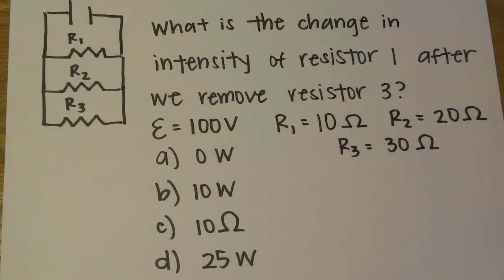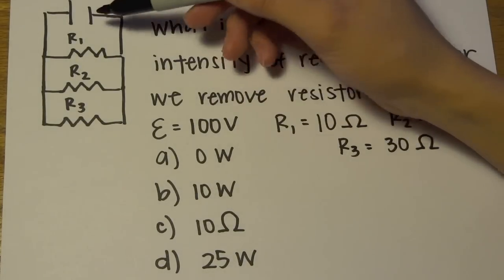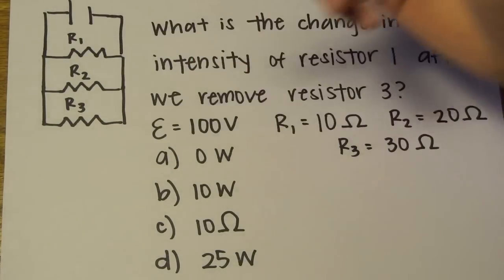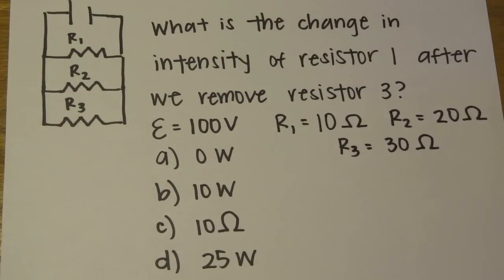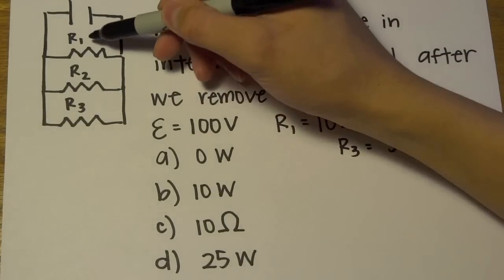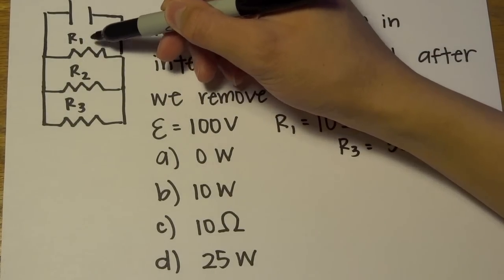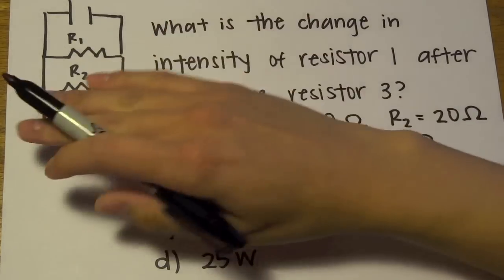The way we want to solve this is first we want to look at what we know and find out what we need to know. We're given that this is 100 volts, 10, 20, and 30. They want us to find the intensity, the change in intensity of resistor 1 after we remove resistor 3. So we're trying to find the intensity here. And intensity, what they mean by that is power. So you want to find the change in power in this resistor when we remove that.